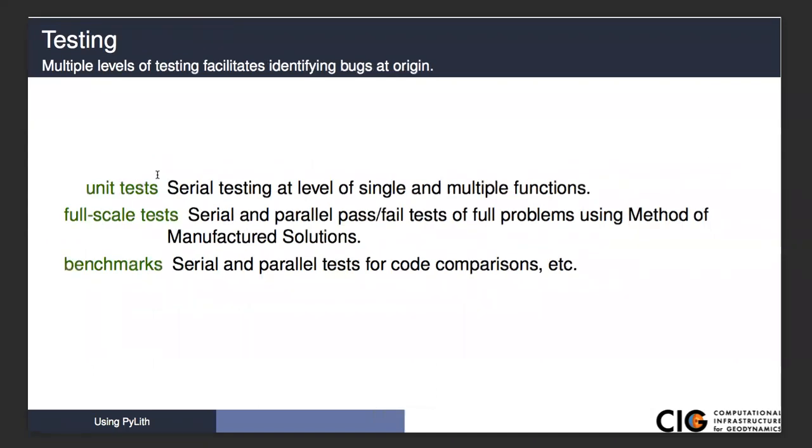We test at various levels. We have unit tests that are at the scale of a function. When we write a function, there is a test that tests to make sure that function does what we want it to do. We also do full-scale tests. We run simulations and check the output against analytical solutions. Some tests are run in parallel so we verify both that the serial version and parallel versions are running properly. Then we have benchmarks. These are more physics-based. There may not be an analytical solution, but we want to test things for comparing against other codes, looking at serial and parallel variations and scaling in parallel.